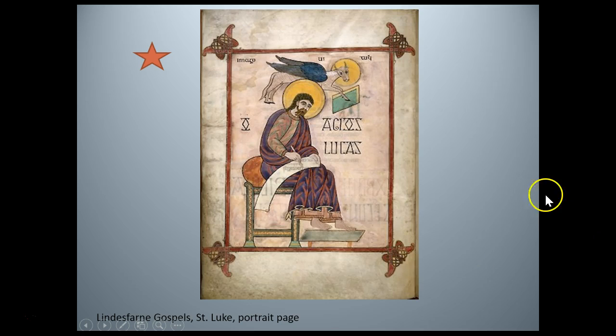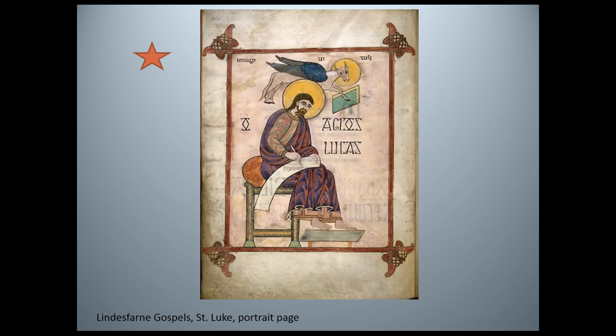He wears a purple robe streaked with red — remember, purple is a very imperial color. When you look at this, you can sort of imagine the idea of the Roman philosopher. There might be some throwbacks to classical art hovering around this part of the region, and so he does sort of reference a fourth or fifth century Roman philosopher type. There's a gold halo behind Luke's head indicating his divinity. Above his halo flies a blue-winged calf — its two eyes turn toward the viewer with its body in profile.